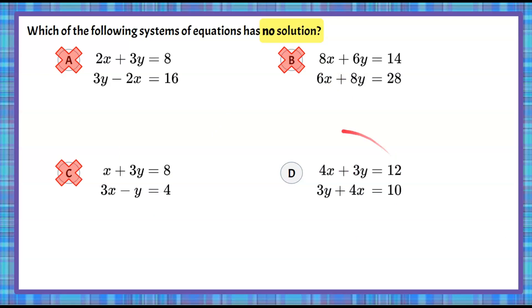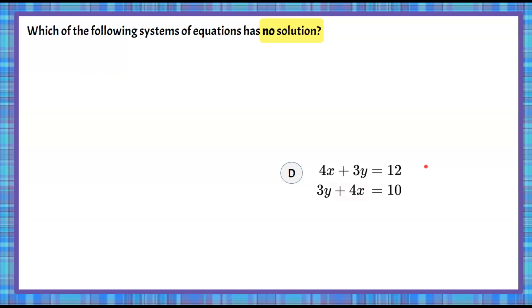So this leaves us answer choice D. But let's just not assume that we did everything right. Let's check it to be sure. So we're going to look at this and see that our x terms are not lined up, and our y. So we're going to use commutative property and reverse that. So now I can see I have the same coefficients.